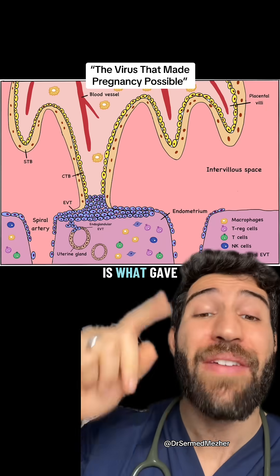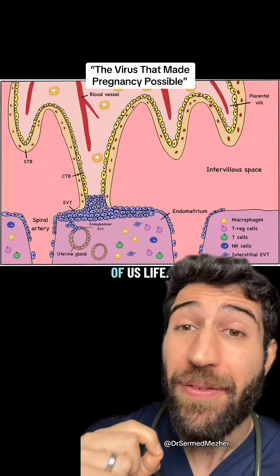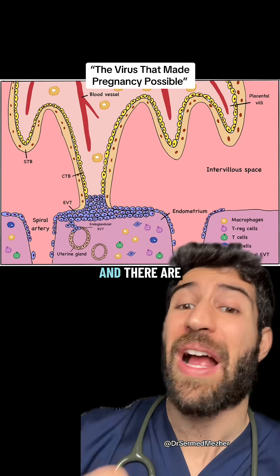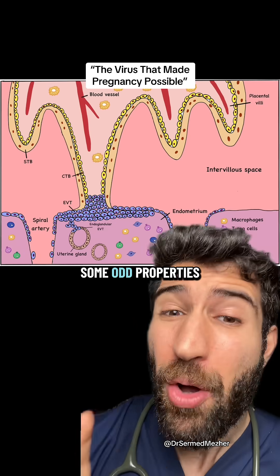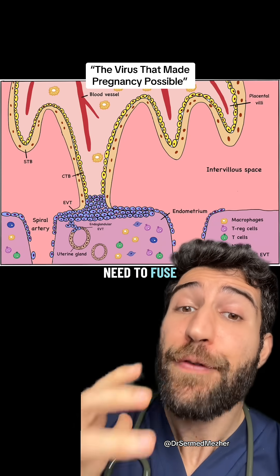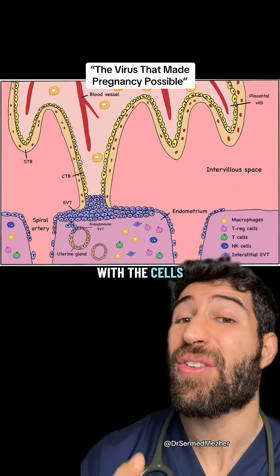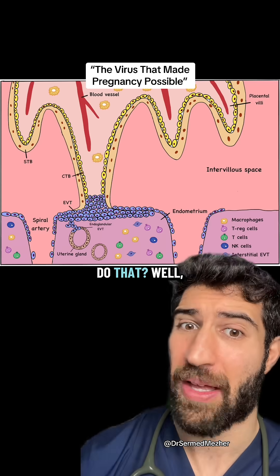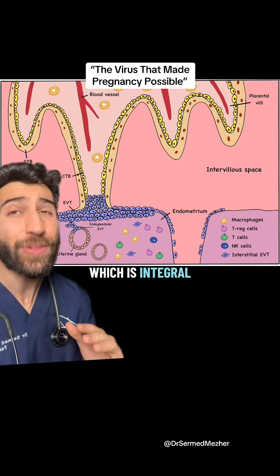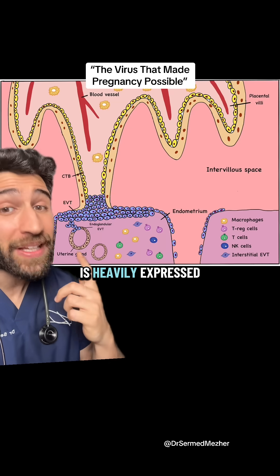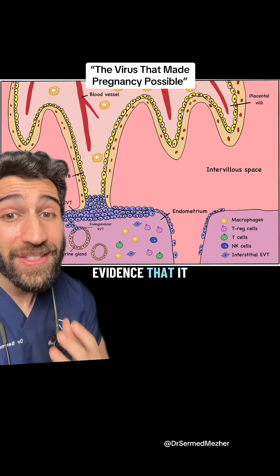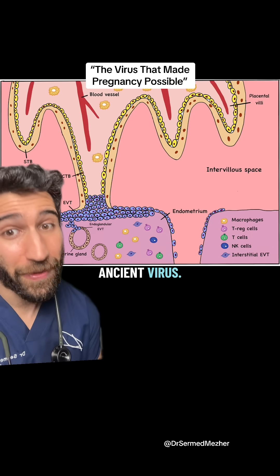What you're looking at here is what gave every single one of us life — it's the interface between the placenta and the womb. There are some odd properties about this, because the cells of the fetus need to fuse with the cells of the mother. And how can they do that? Well, there's a protein called syncytin, which is integral to this process, is heavily expressed in the placenta, and there's good evidence that it came from an ancient virus.